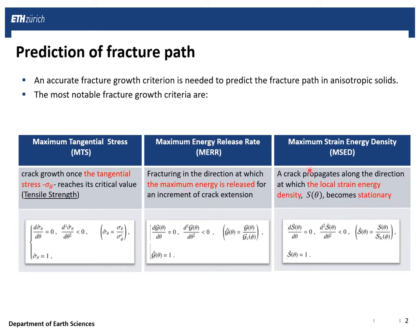The last one is the maximum strain energy density or MSED, which postulates that the crack grows along the direction at which the local strain energy density S-theta becomes stationary. These stationary points, depending on the material, may be either the maximum or the minimum value of the function. For example, in isotropic cases, we are looking for the minimum strain energy density to determine the angle at which fracturing happens.